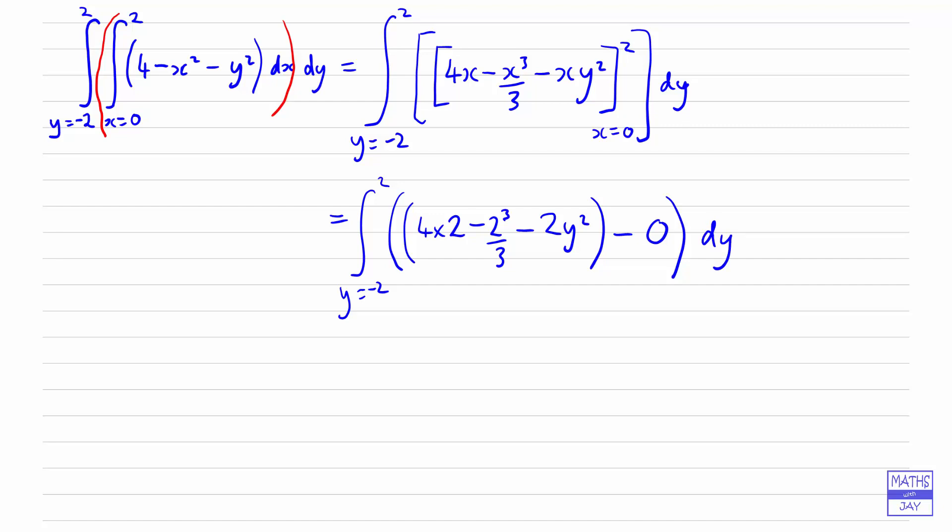Now we don't need to put y equals because we don't have an x anymore, so we've got minus 2 to 2 there. Let's work out what we've got: 4 times 2 is 8, 2 cubed is 8, so 8 minus 8 over 3, that's 24 minus 8 which is 16 over 3. So our constant is 16 over 3 minus 2y squared. We're simplifying before doing the final integral.